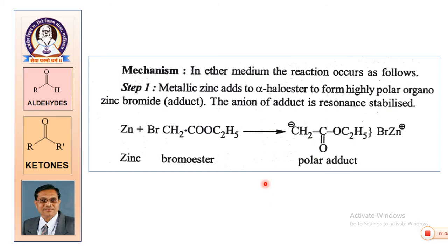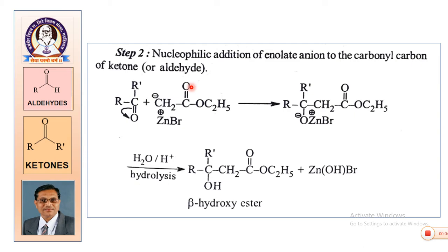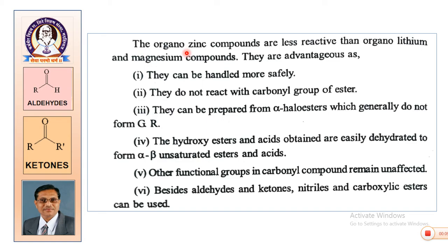In the mechanism: in the first step, an organozinc bromide adduct is formed. This organozinc bromide is a polar molecule that undergoes nucleophilic addition to the carbonyl group. Since the carbonyl carbon is electropositive and oxygen is electronegative, we get an intermediate complex which on hydrolysis gives the beta-hydroxy ester, which can then be further processed as required.